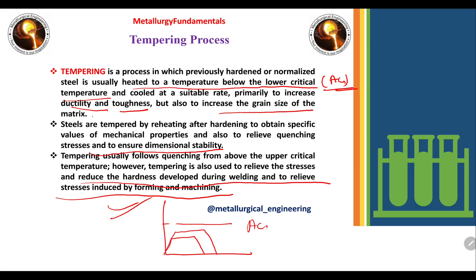There are different stages of tempering — first, second, and third stage — which depend on the temperature range selected relative to Ac1. For example, heating below Ac1, holding, and then air cooling constitutes the tempering process. Tempering helps improve the mechanical properties by increasing the ductility and toughness of the material, and at the same time it relieves the residual stresses introduced during hardening.